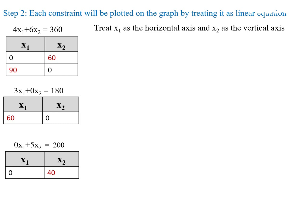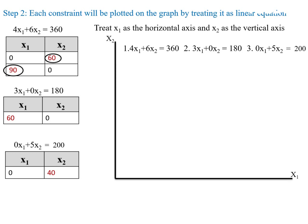Read x1 as the horizontal axis and x2 as the vertical axis. The highest value for x1 is 90 and for x2 is 60. We make equal divisions of 20 on each axis: 5 divisions on the x1 axis covering up to 90, and 4 divisions on the x2 axis covering up to 60. Next, plot the first constraint coordinates on the graph.